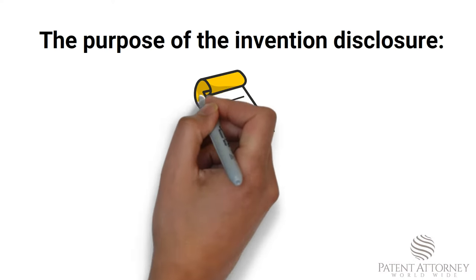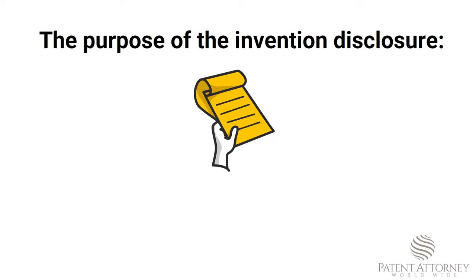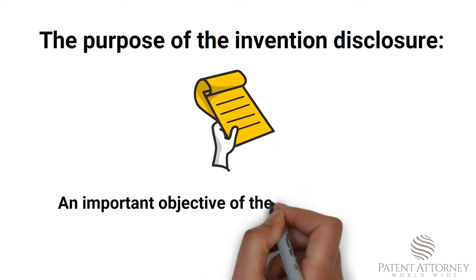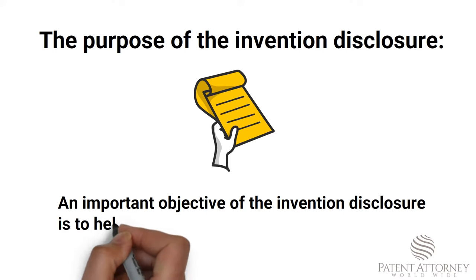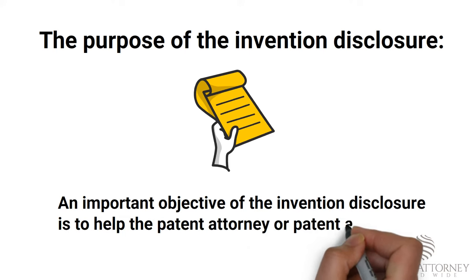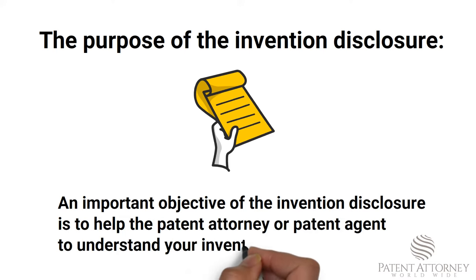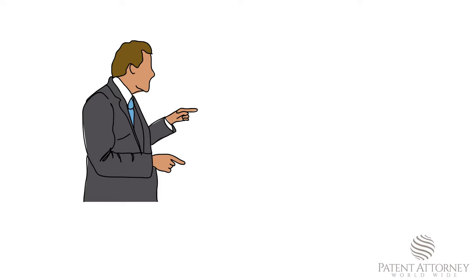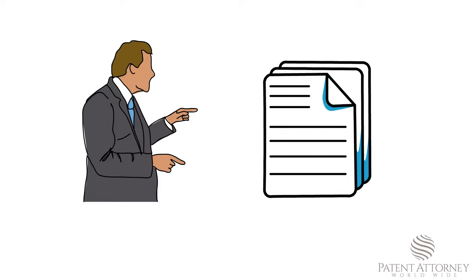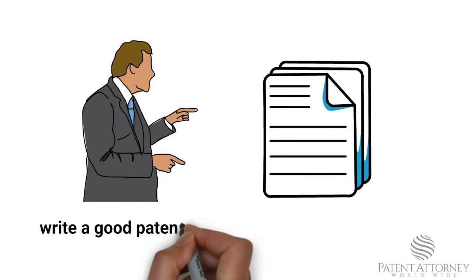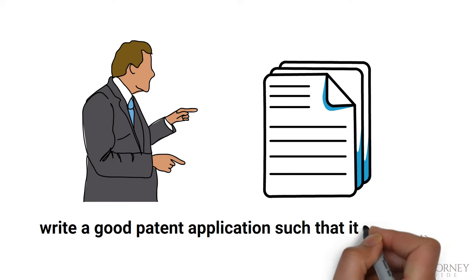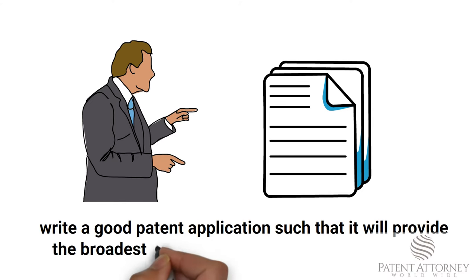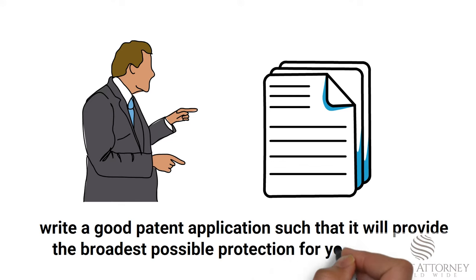The purpose of the invention disclosure: An important objective of the invention disclosure that you would be writing is to help a patent attorney or a patent agent to understand your invention completely. In other words, the patent attorney should be able to stand in your shoes and see all the details of your invention, to be able to draft or write a good patent application that will provide the broadest possible protection for your invention.